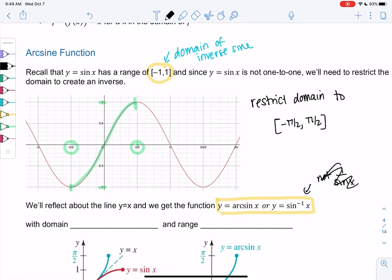So the domain will be negative one to one because that's the range, and then my range is the domain, the restricted domain, so it'll be negative pi over two to pi over two.